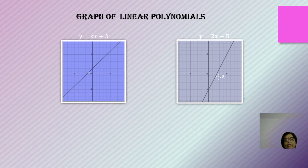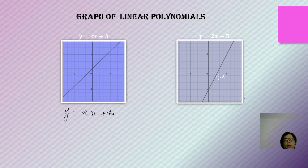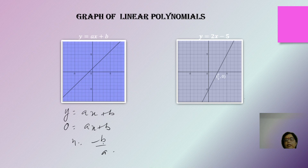A linear polynomial will intersect the x-axis at exactly one point. Where it intersects the x-axis, the y-coordinate is 0. So if we put 0, we get ax + b = 0, giving x = -b/a. This is the zero of the linear polynomial in terms of the coefficient of x and the constant.